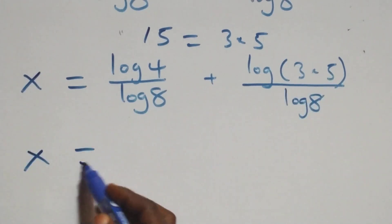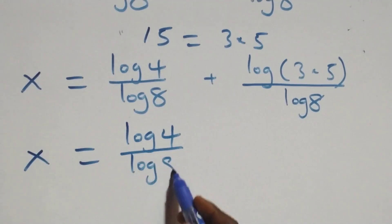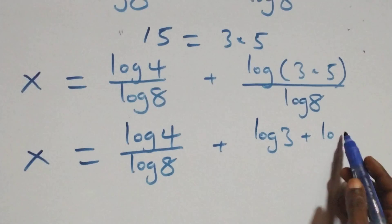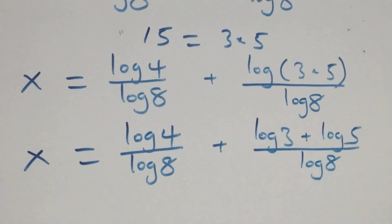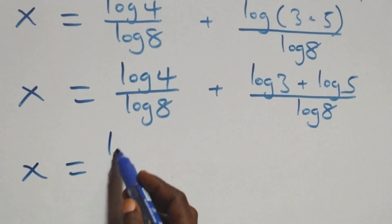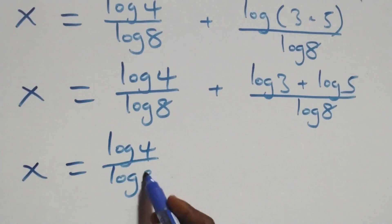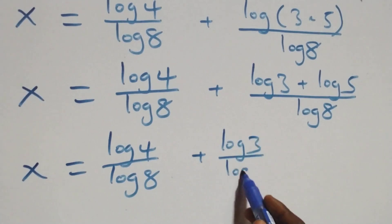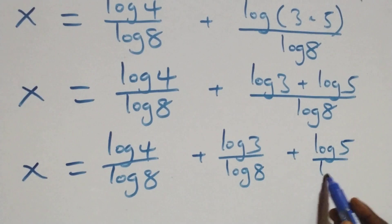Then, from all we have here, we separate this into fractions and we have x equals to log 4 over log 8 plus log 3 over log 8 plus log 5 over log 8.